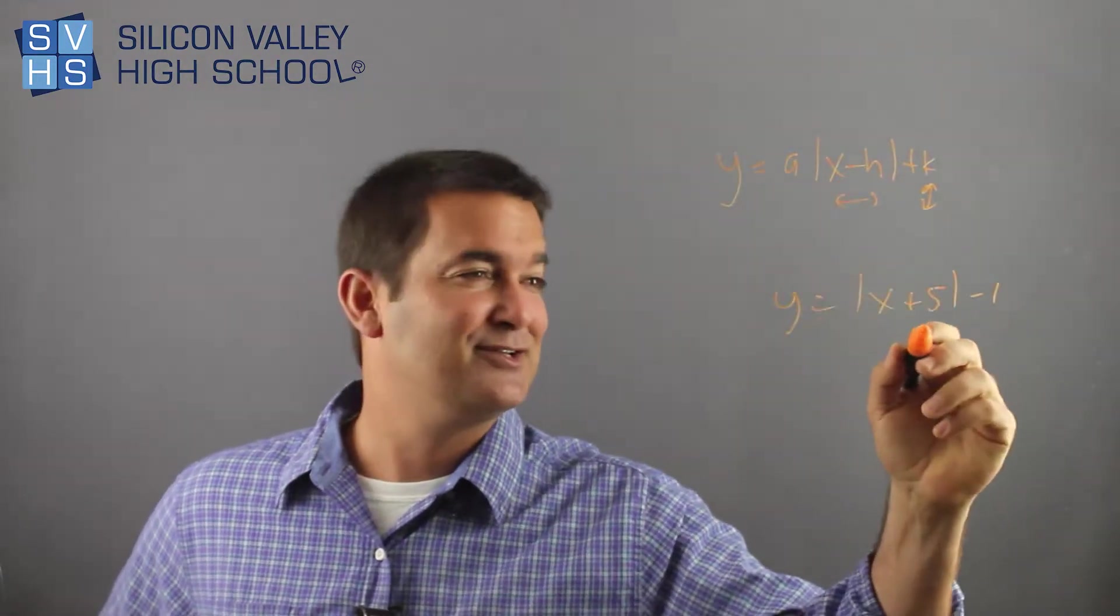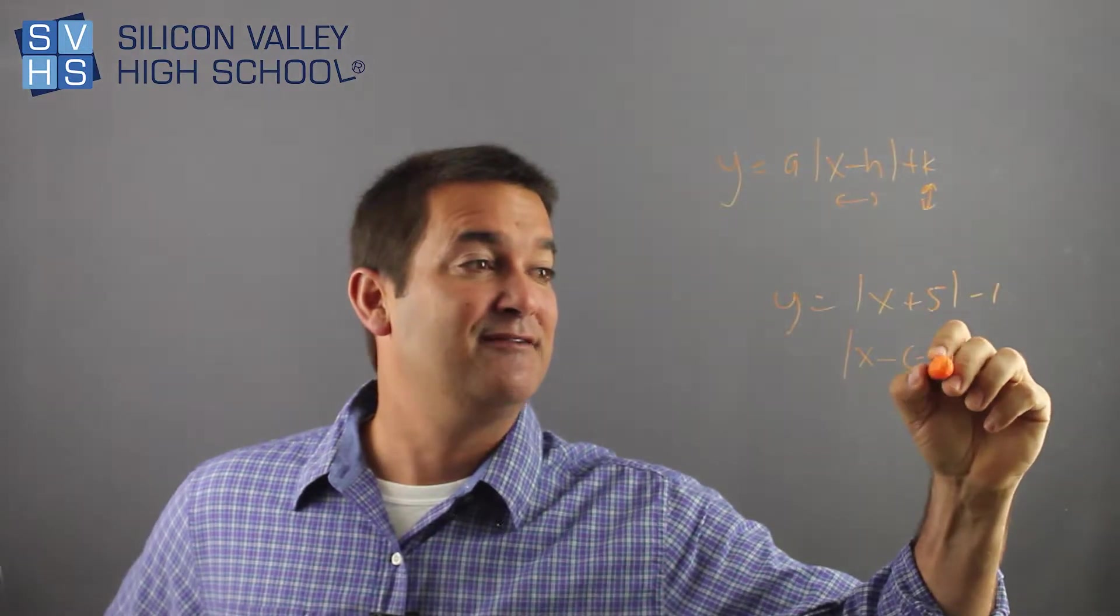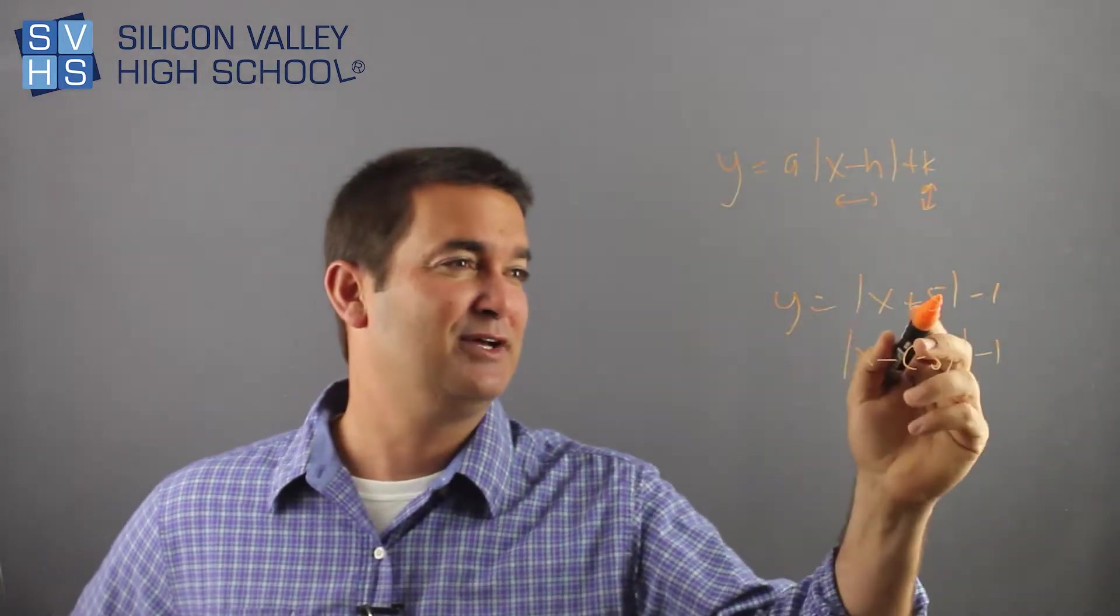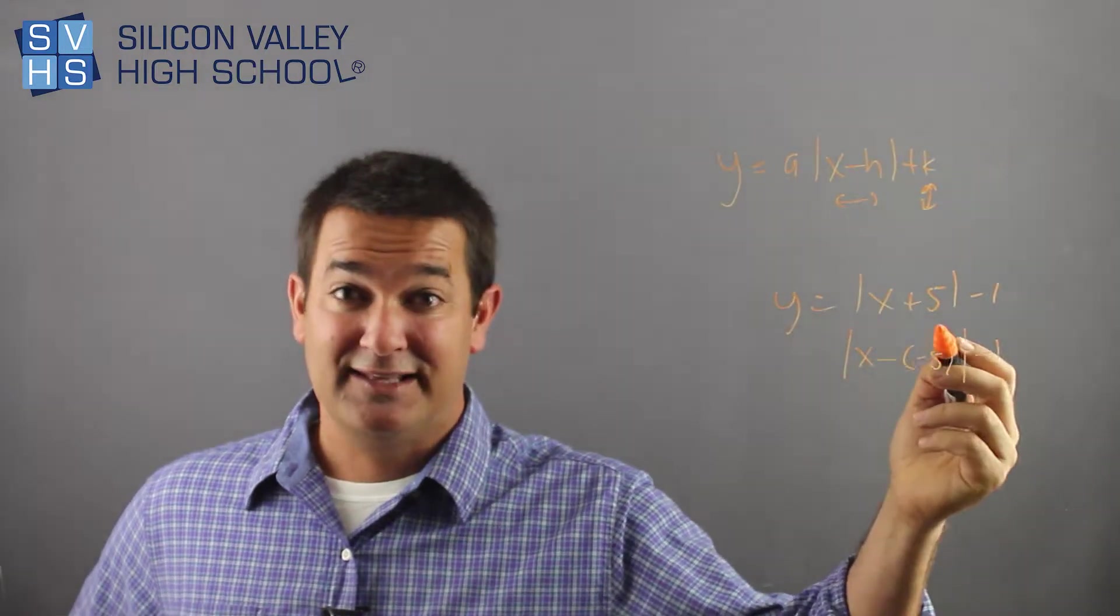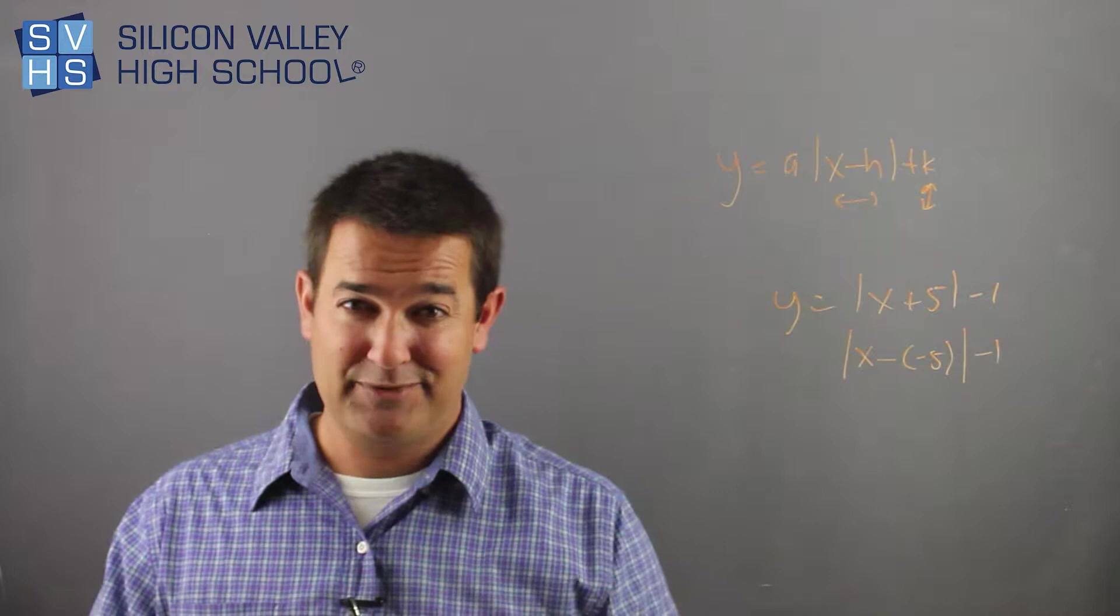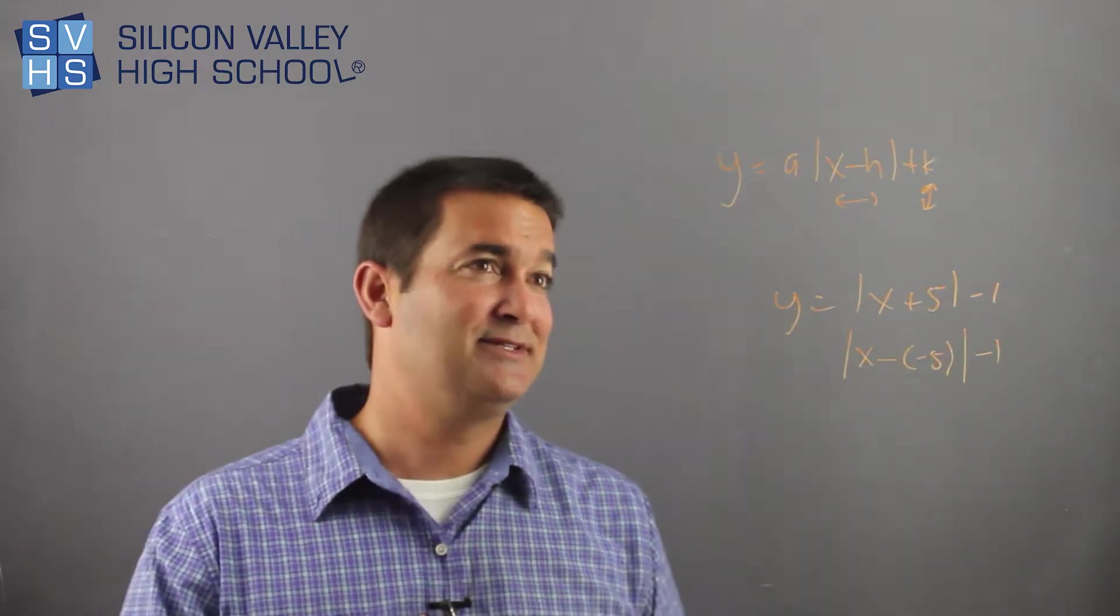Remember, the formula had a minus. So this is technically X minus negative 5 if you want to get all mathy about it. Right? X plus 5 would be to the left 5. So don't get messed up on the whole inside being the opposite thing. And the outside is not opposite.